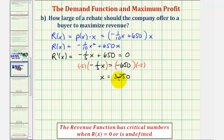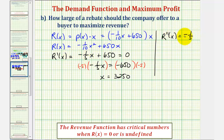To verify that this X value maximizes the revenue function and not minimizes it, we use the second derivative test. R double prime of X equals negative one-fifth. Since the second derivative is negative, the function is concave down, which means at this critical number we have a relative maximum. So the revenue is maximized at a quantity of 3,250, but the question asks about how large of a rebate we should offer.